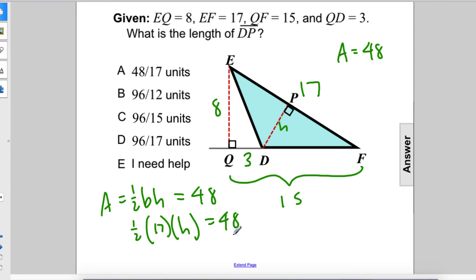So we multiply the whole thing by 2, we get 17H equals 96. Therefore, H equals 96 over 17 units. The answer is D.